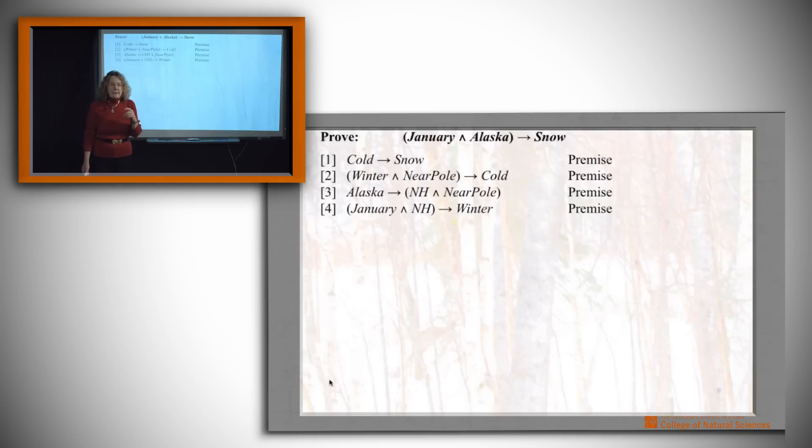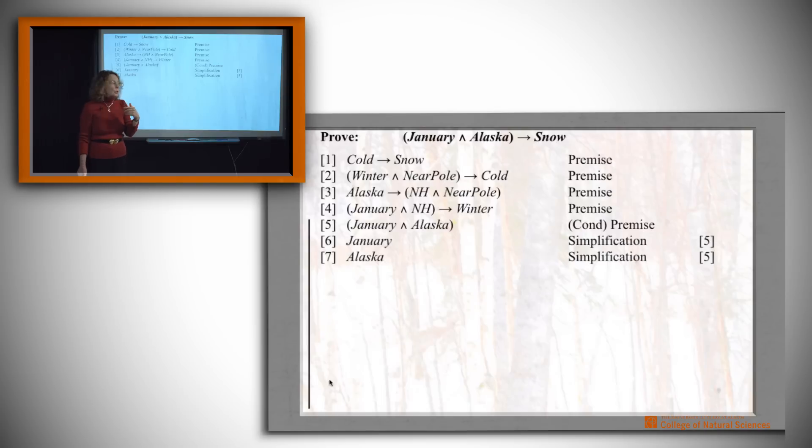Here are the things that we're told. Let's add that it's January and Alaska. And what's our justification for that? We're going to treat it like a premise, but it isn't a normal premise because we haven't been told it. It's what we're going to call a conditional premise. Think of it as assume that it were true that it's January and Alaska, and let's see where that gets us. So let's see where it gets us. The first thing we're going to do is pull it apart into two pieces so that we can use them separately. So using the simplification rule, we have, well, it's January and it's Alaska.